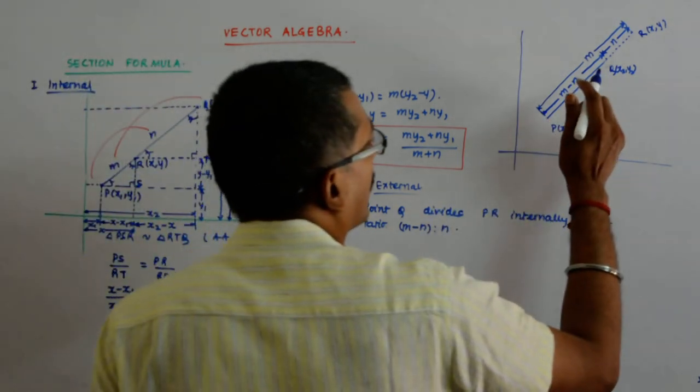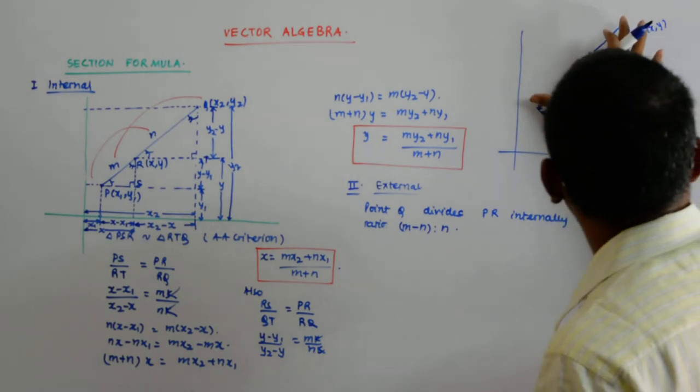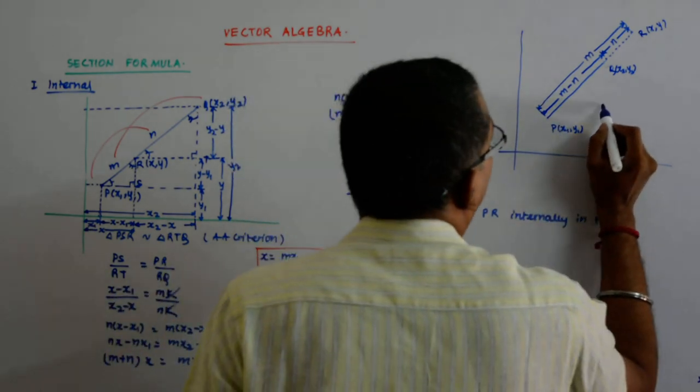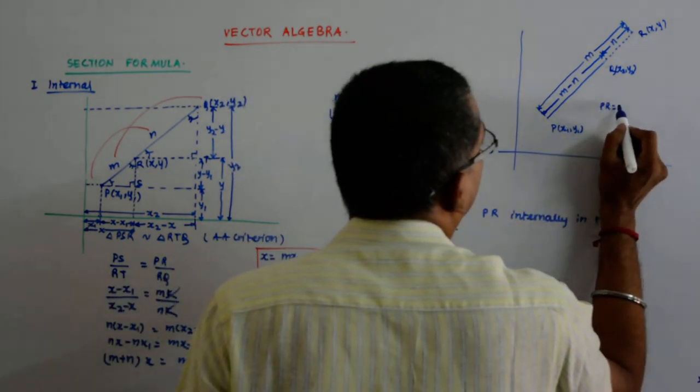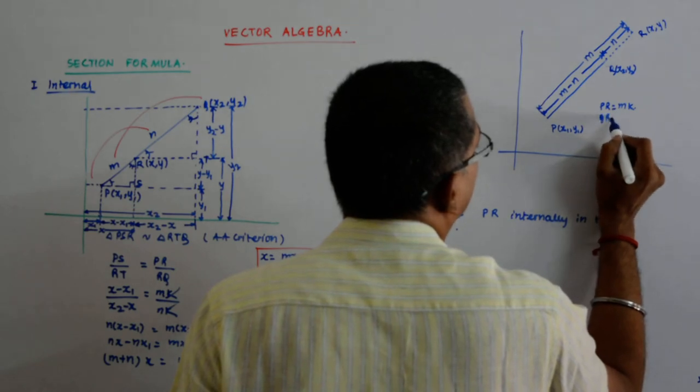And what do we do and you understand why this is m minus n, because the actual length of p r is what, m k and the length of q r is m k.